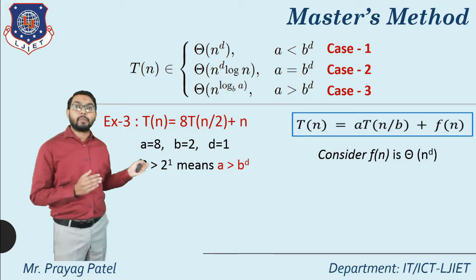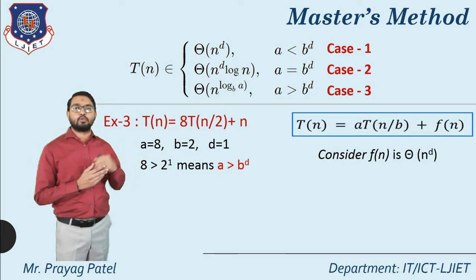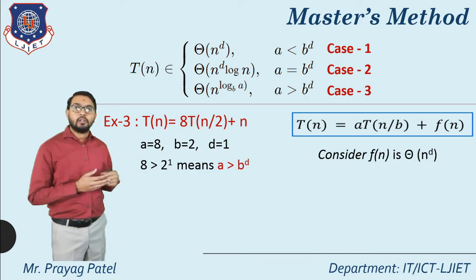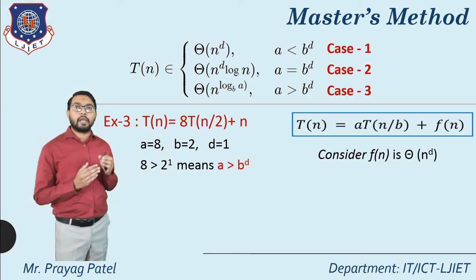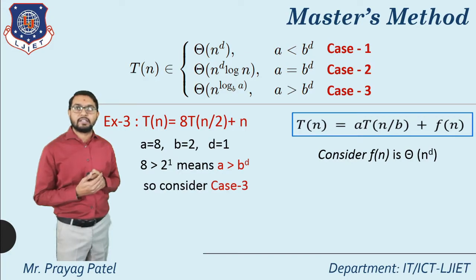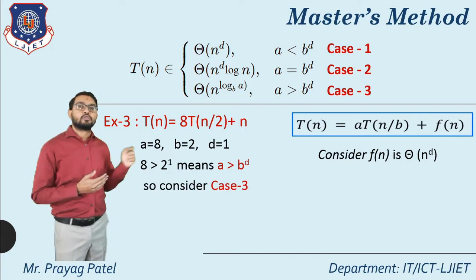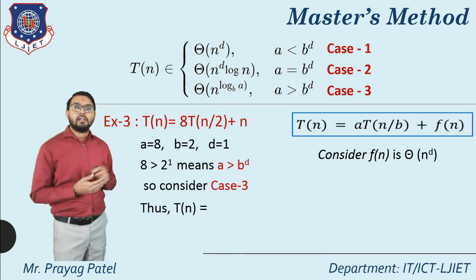Comparing the conditions: a = 8 and b^d = 2^1 = 2. Here a = 8 is greater than 2, so a > b^d is satisfied. Therefore apply case 3.